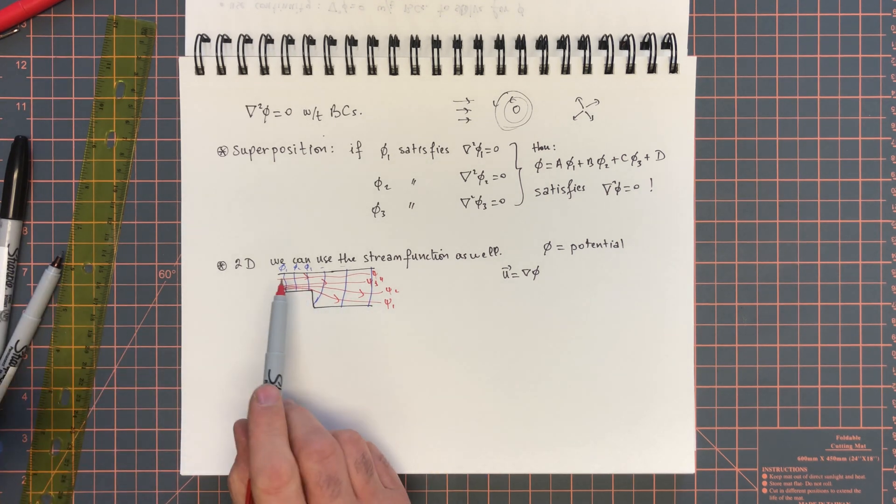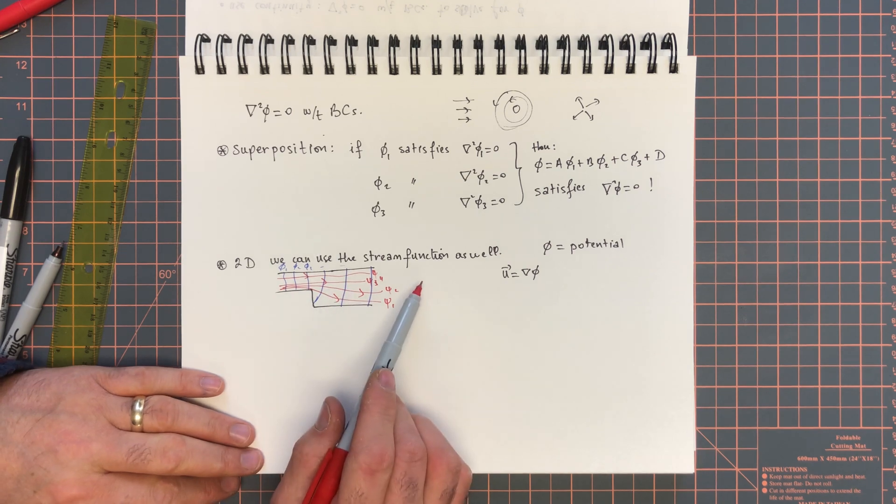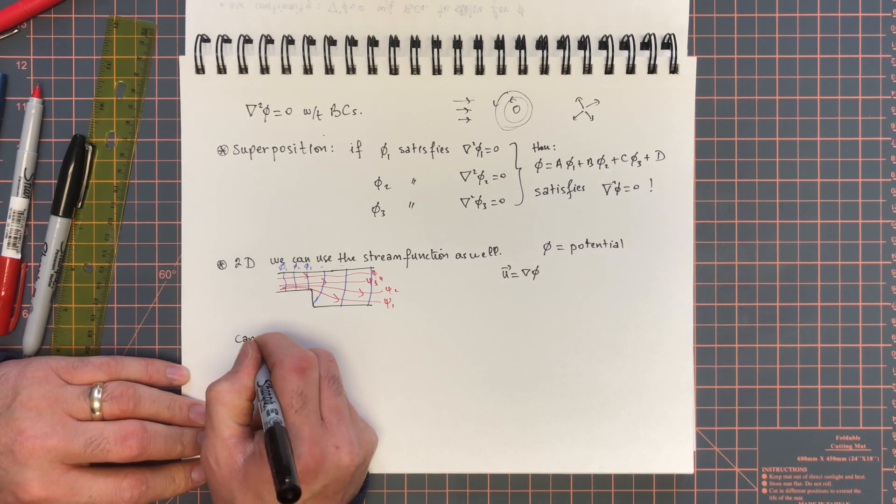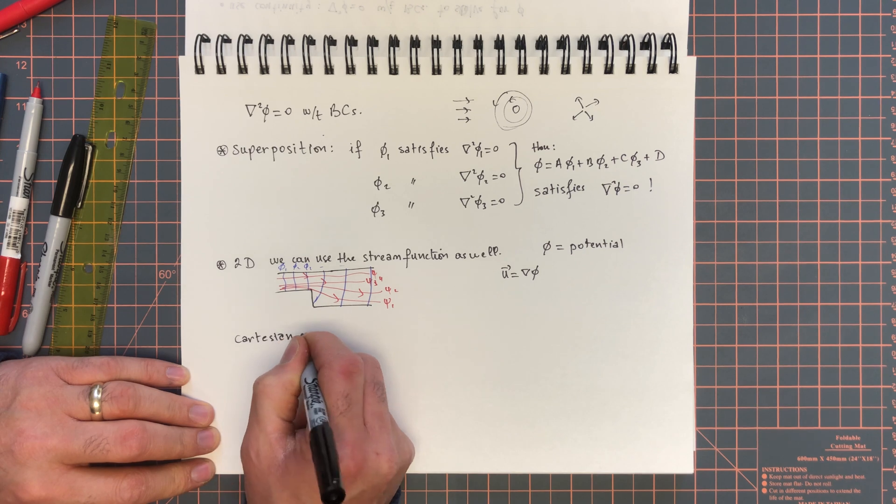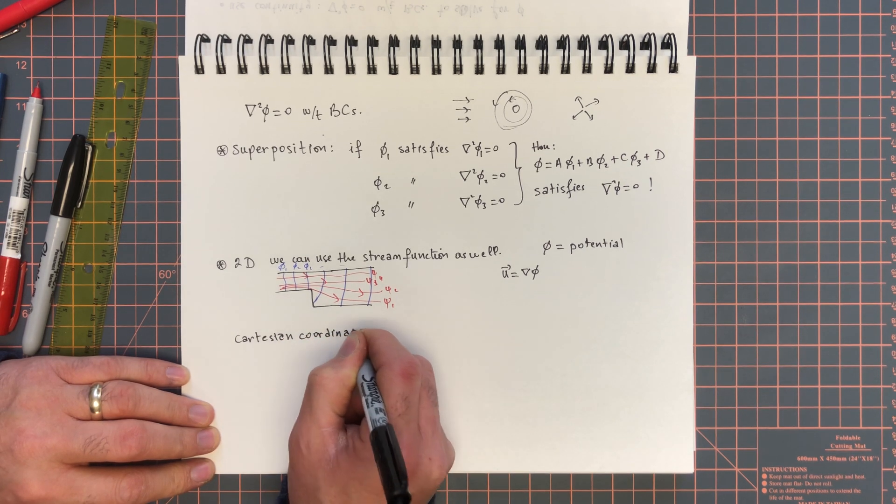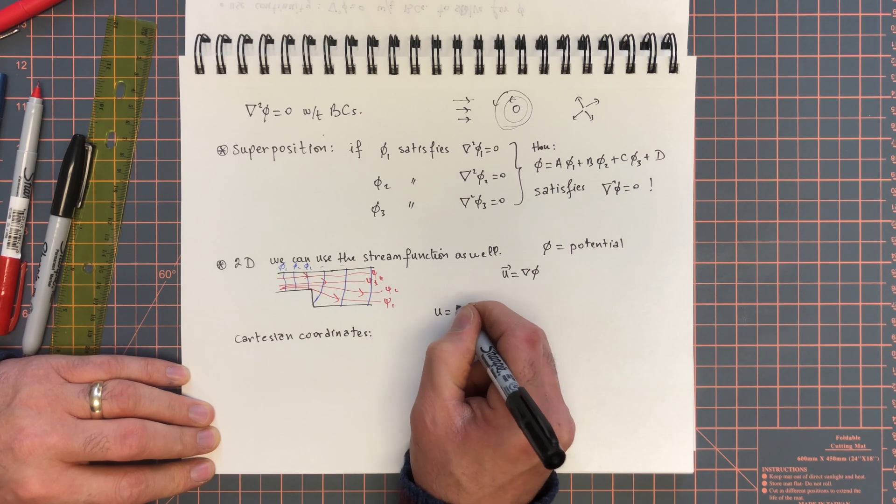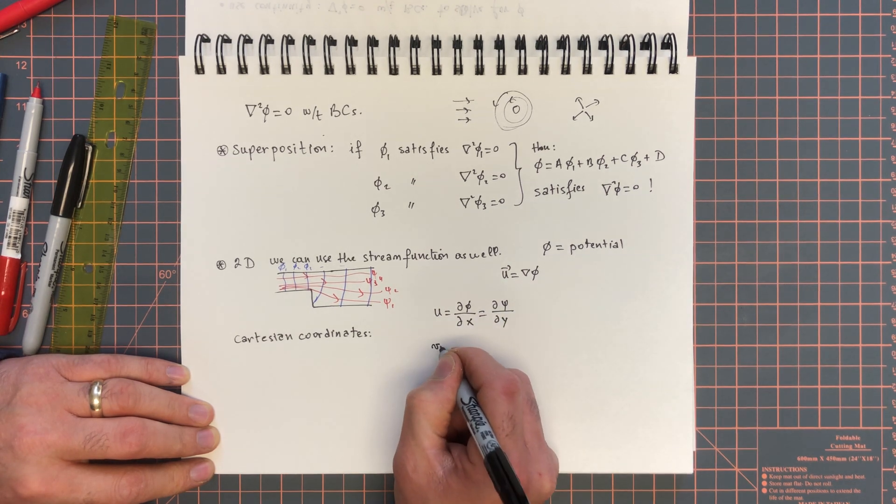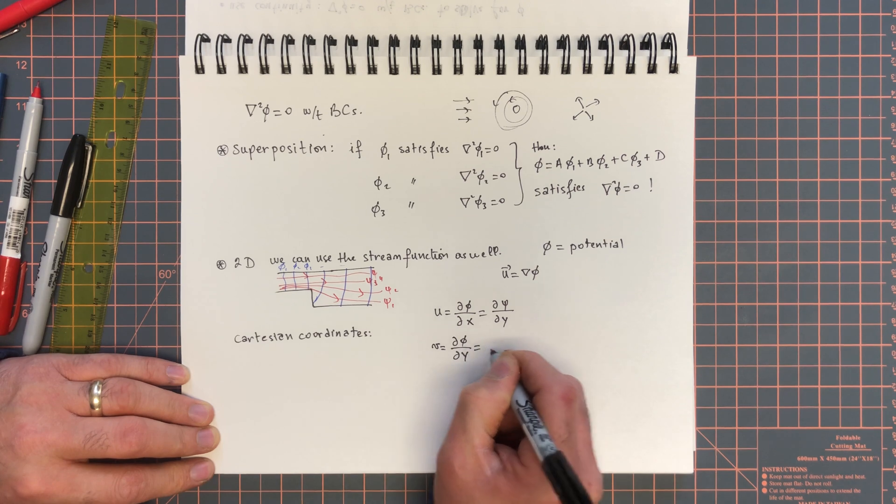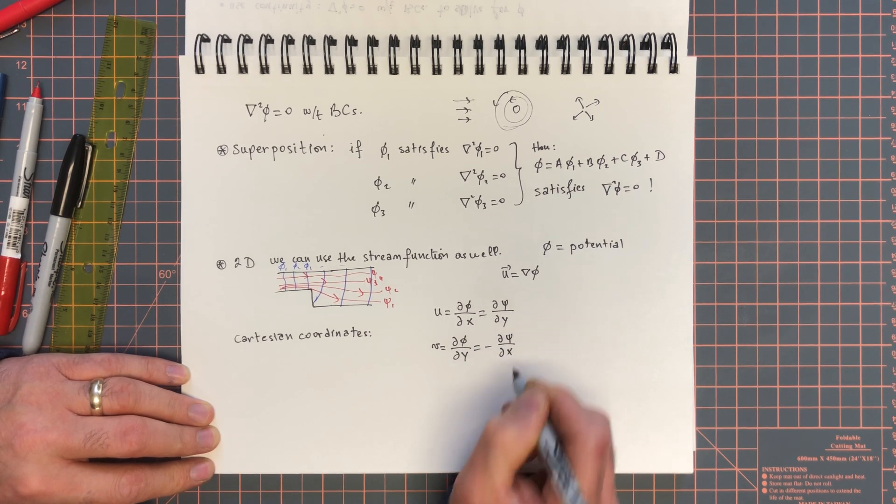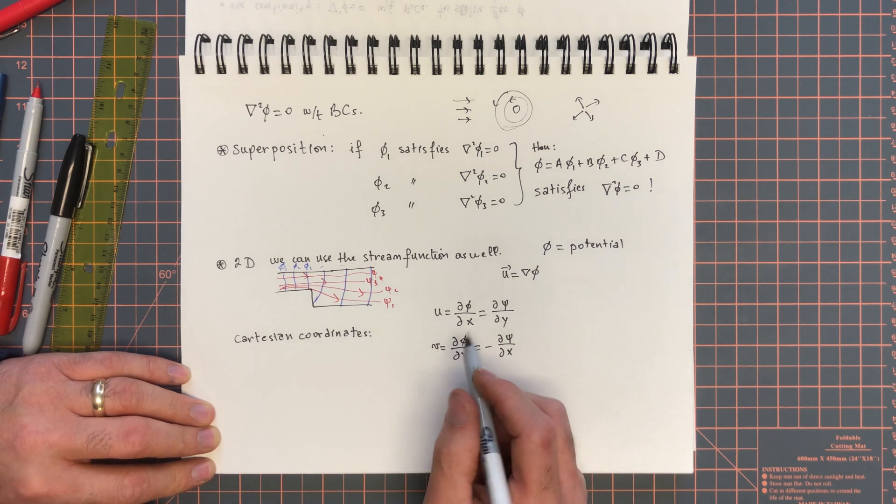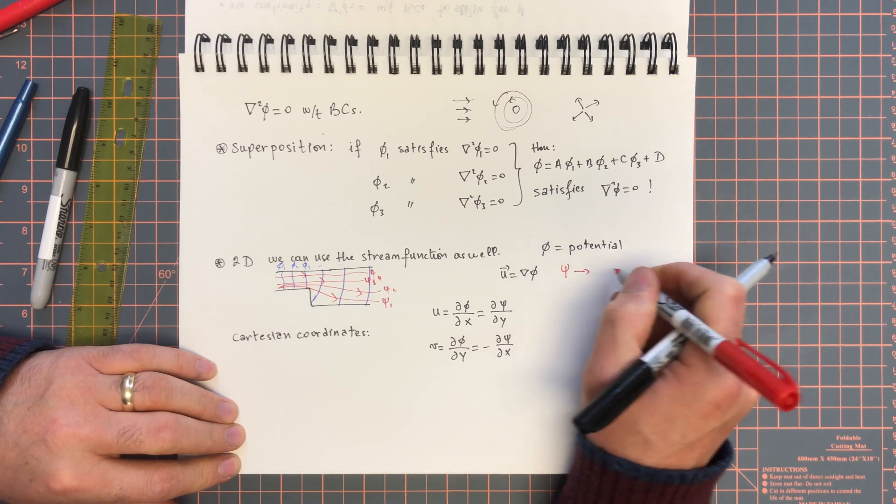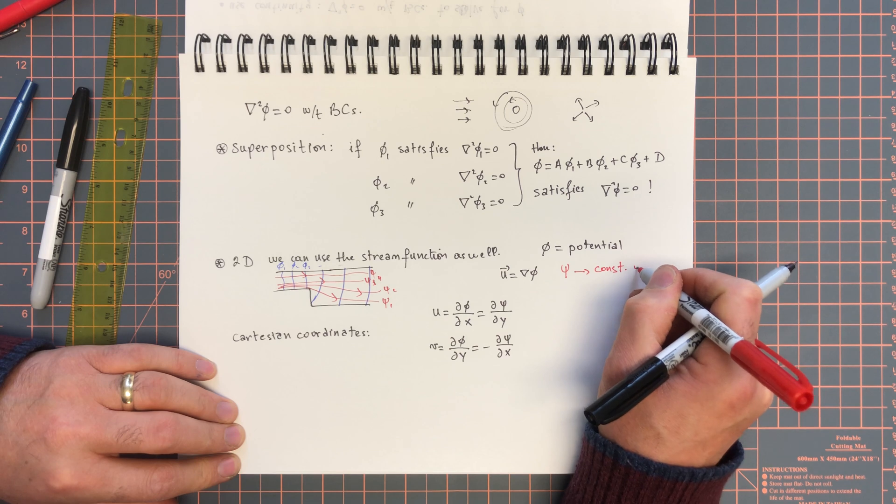And we can see this when we look at the definition of the stream function and the velocity potential. So, remember, u is grad phi. And for a 2D, take Cartesian situation, for example, Cartesian coordinates. u is d phi by dx. And that's equal to d psi by dy. And v is equal to d phi by dy. And that's equal to minus d psi by dx.